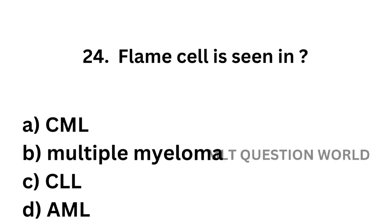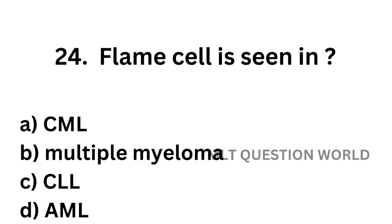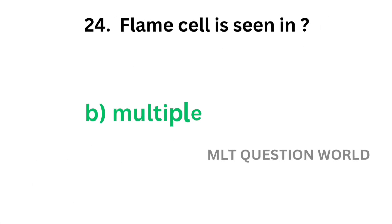Question number 24. Flame cell is seen in: Option A, chronic myeloid leukemia; Option B, multiple myeloma; Option C, chronic lymphoid leukemia; Option D, acute myeloid leukemia. The correct answer is Option B, multiple myeloma. Flame cell is seen in multiple myeloma.